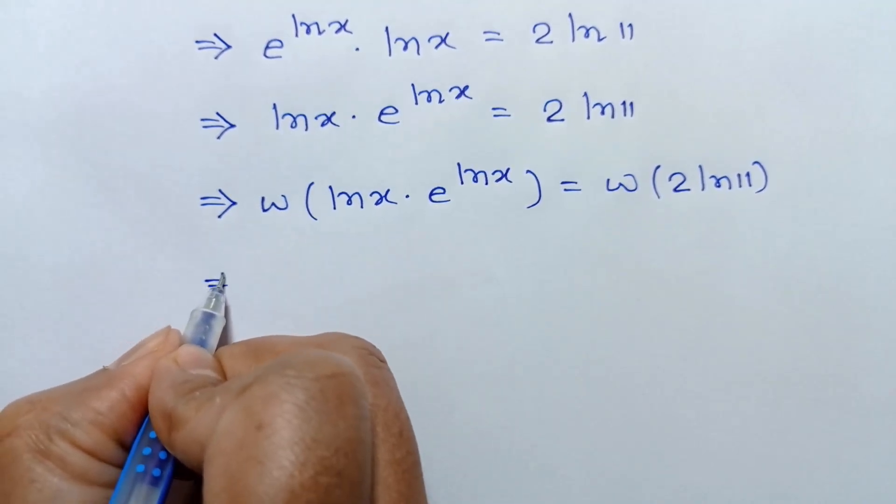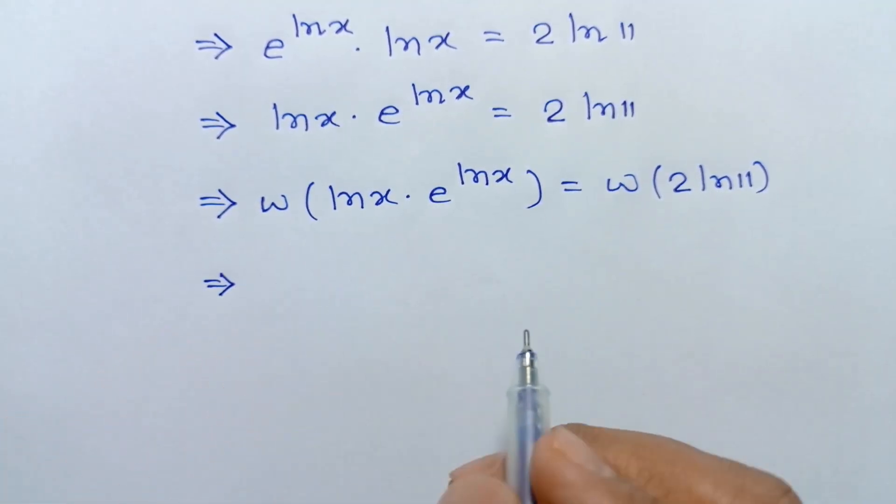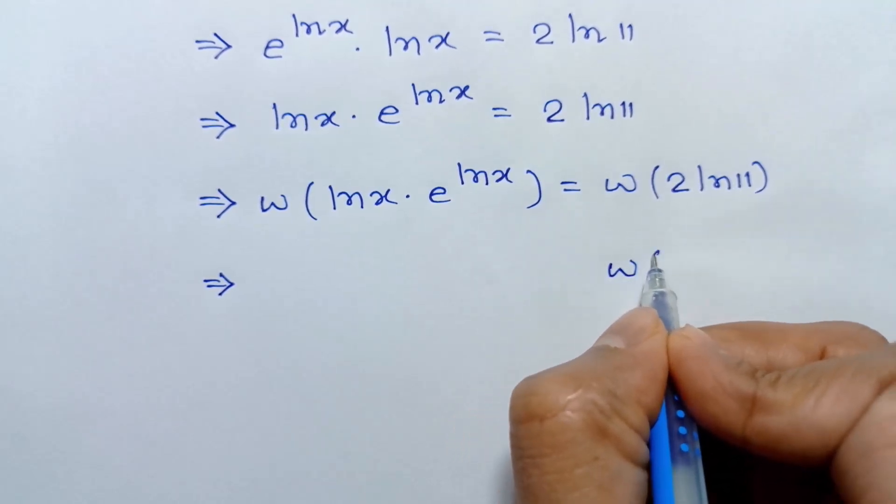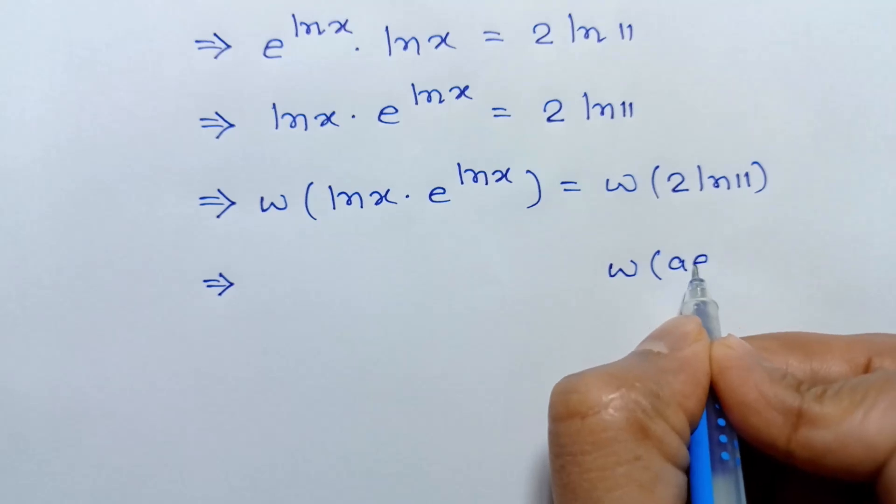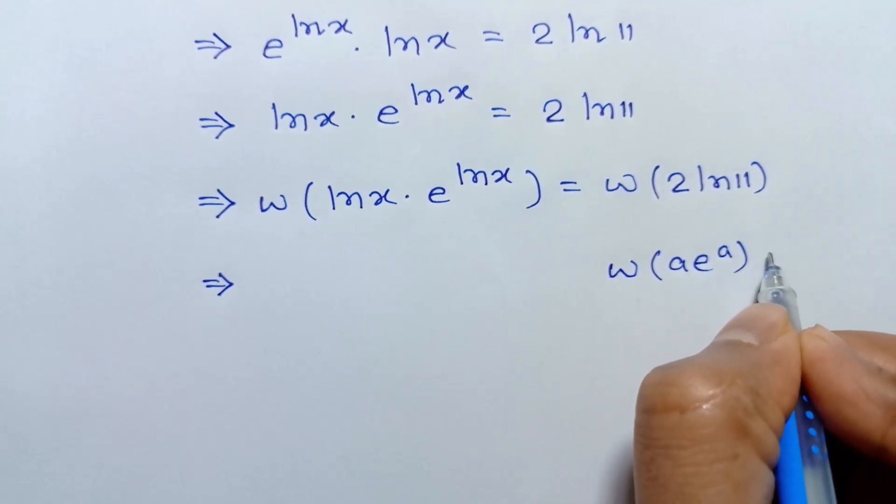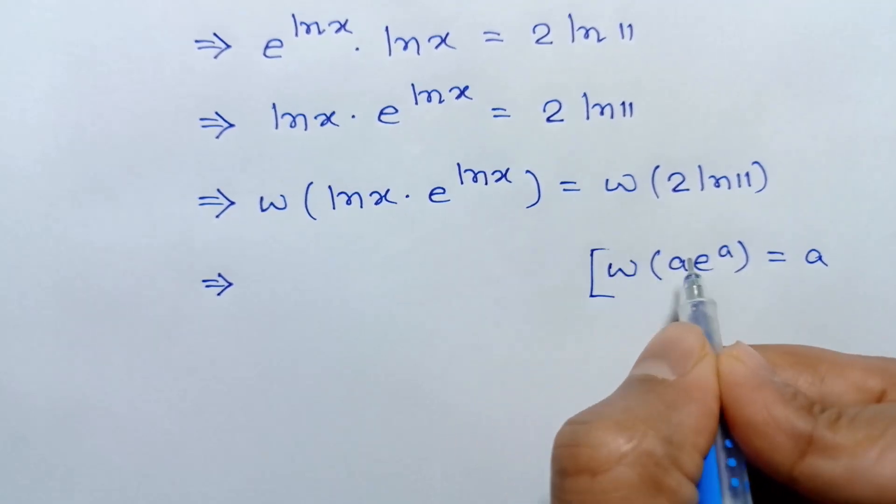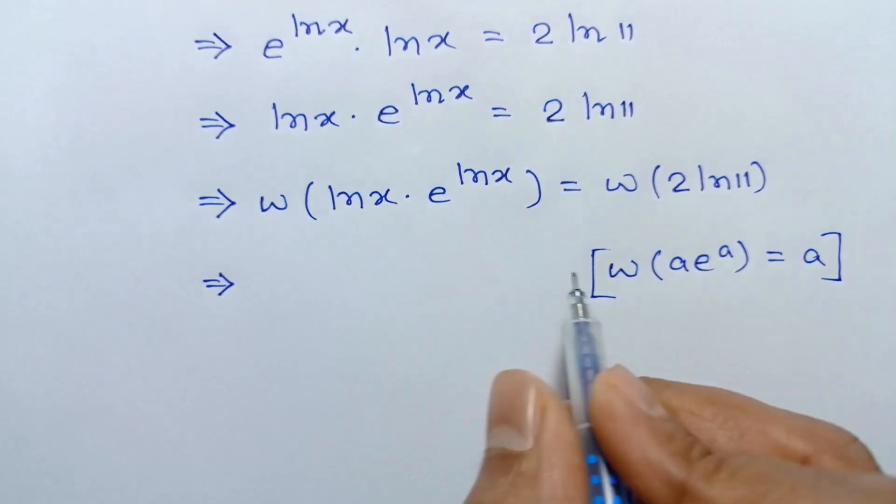According to this formula, W of A times e to the power A equals A. Now applying this formula here...